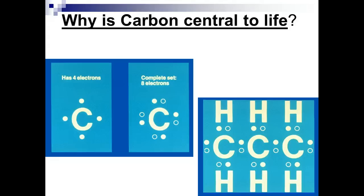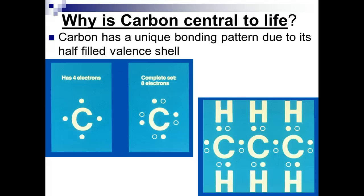So why is carbon so central to life? It's because it has four valence electrons, and because it has four valence electrons, it's seeking four other valence electrons. When doing so, it's able to create four bonds on all sides, which allows for long chains and rings to form, giving us the structural components that are so important to life.